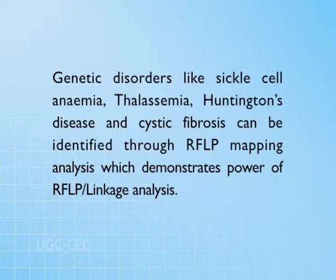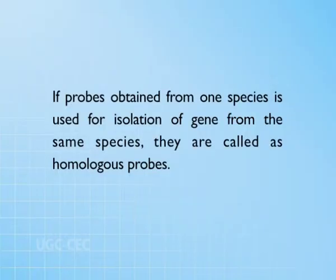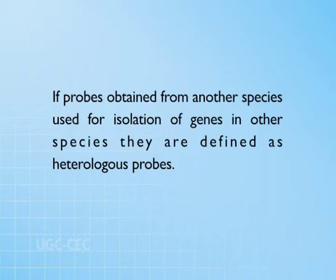Genetic disorders like sickle cell anemia, thalassemia, Huntington's disease, and cystic fibrosis can be identified through RFLP mapping analysis, which demonstrates the power of RFLP linkage analysis. Specific molecular probes can be used for isolation of specific genes, available either from the same species or from another species. If probes obtained from the same species are used, they are called homologous probes. If probes from another species are used, they are defined as heterologous probes. These heterologous probes have been found to be effective in identifying gene clones during colony hybridization, plaque hybridization, or on Southern blots.